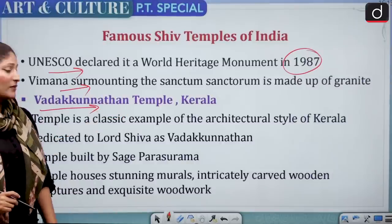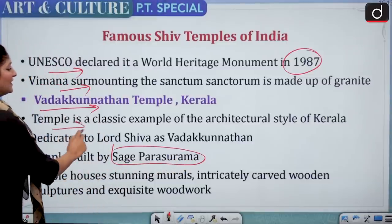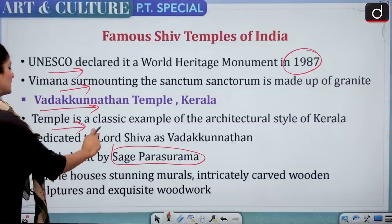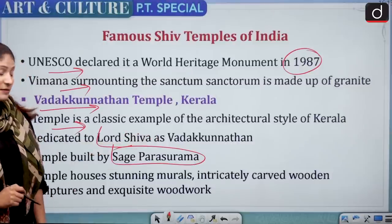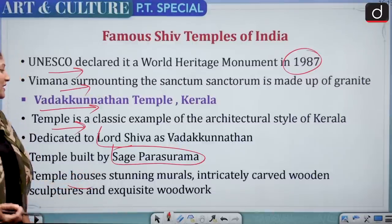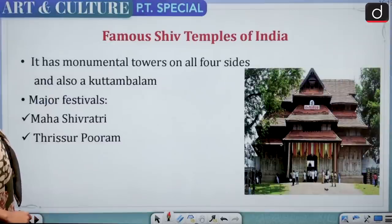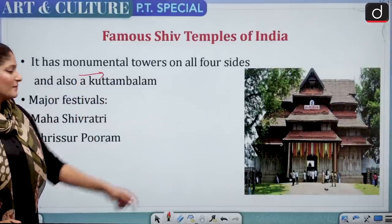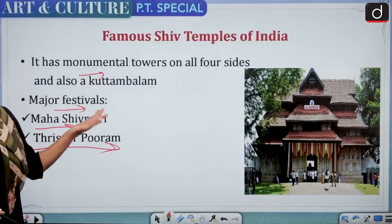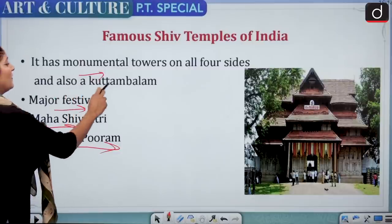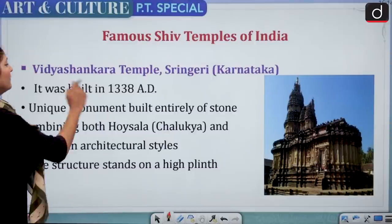Vadakkunathan Temple of Kerala was made by sage Parashurama — very important. It is a classic example of the architectural style of Kerala and is a Shaivite temple. The temple deity is known as Vadakkunathan. The temple houses stunning murals, intricately carved wooden sculptures, and exquisite woodwork. It has monumental towers on all four sides. Major festivals are Maha Shivaratri and Thrissur Pooram. The towers are also known as Kuttambalam.